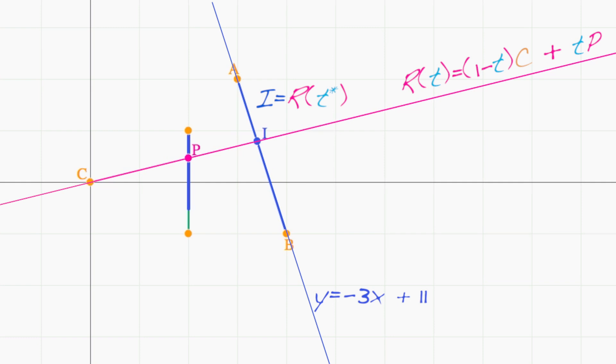This is really two equations, one for the x-coordinate of i and one for the y-coordinate. These two equations are i sub x equals r sub x of t star, which equals 1 minus t star times c sub x plus t star times p sub x. In the same way, i sub y equals r sub y of t star, which equals 1 minus t star times c sub y plus t star times p sub y.